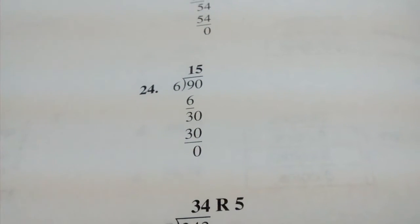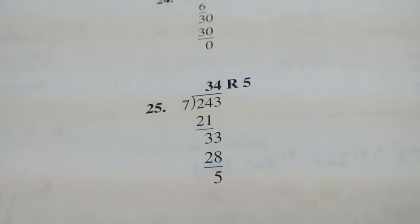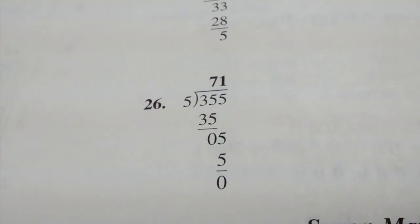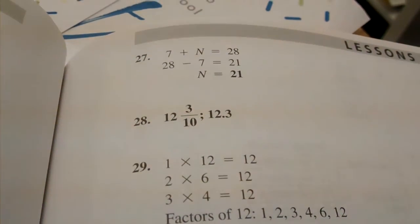Number 24, 15. Number 25, 34 remainder 5. Number 26, 71. Number 27, N equals 21.